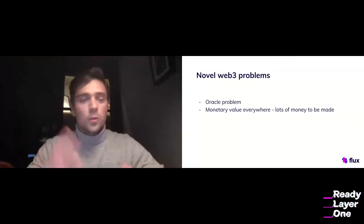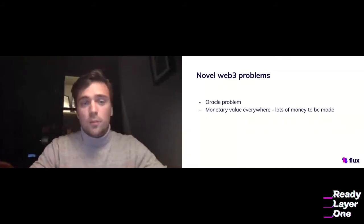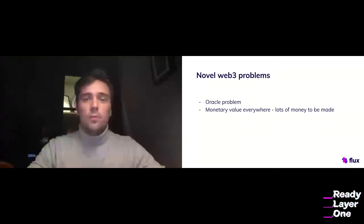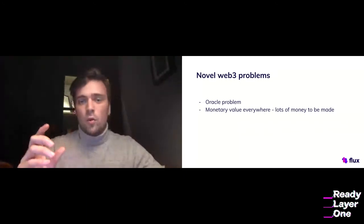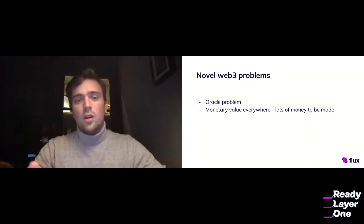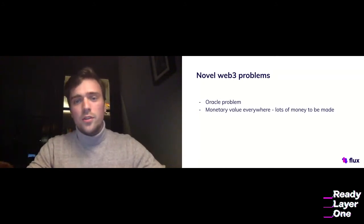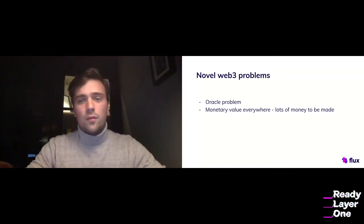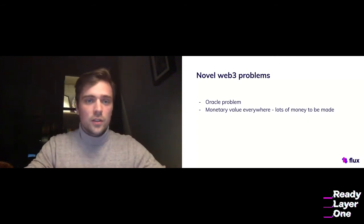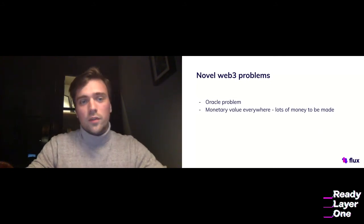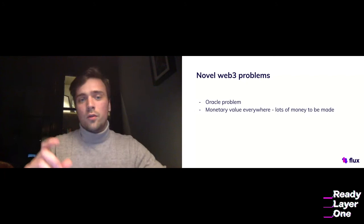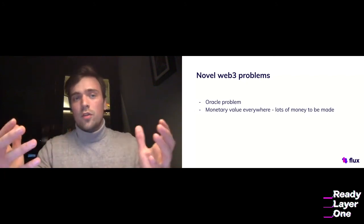That's a super difficult problem. The second issue is that there's monetary value everywhere, especially in a protocol like Flux, which is a DeFi protocol designed around containing lots of monetary value going in and out. There is lots of money to be made for malicious actors through either exploits or hacks. In most DeFi problems, the Oracle is sort of the gatekeeper protecting all of this monetary value.